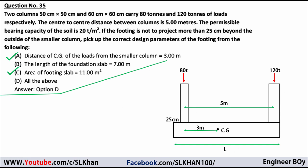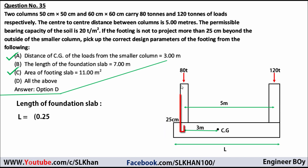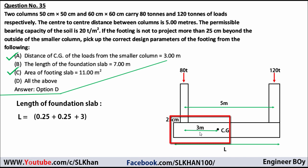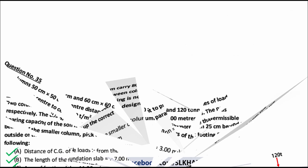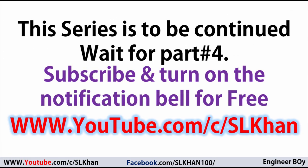Now analyzing option B — the length of the foundation slab equals 7 meters. The length is calculated as: 0.25 m (overhang on smaller column side) + 3 m (CG distance) = 3.25 m for one side, multiplied by 2 gives 6.5 m, plus adjustments for column dimensions gives 7 meters total. So option B is also correct. Since options A, B, and C are all correct, the correct answer to question 35 is option D — all of the above. That's it for today, wait for Part 4.